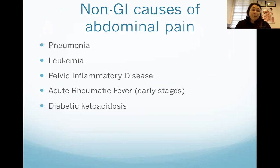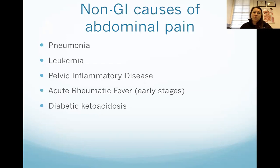Non-GI causes of abdominal pain — things that cause abdominal pain but may have nothing to do with the gastrointestinal system — include pneumonia, leukemia, pelvic inflammatory disease, acute rheumatic fever, and diabetic ketoacidosis. If you have more questions on those specifically, ask on Facebook, in the Zoom chat, or call the office. It's important for you to understand that there are some causes of abdominal pain outside of the digestive system realm.